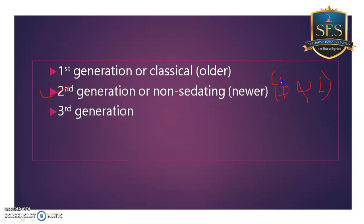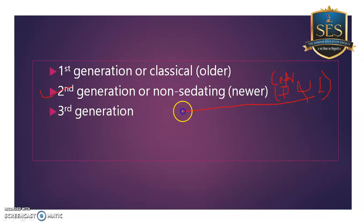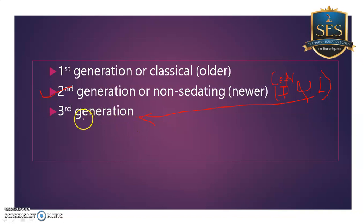An example of a second generation drug is cetirizine. Cetirizine may exist in two forms — it may exist as a racemic mixture, that is dextro and levo. Third generation contains only one form; they further isolated the levo form from the racemic mixture. Third generation is essentially the same drug as second generation, only existing in a single isomeric form — either dextro or levo. An example is levocetirizine.